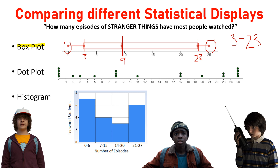Now, one thing you cannot tell looking at Dustin's box plot is how many people he surveyed. You have no idea looking at this box plot if he surveyed five people, a hundred people, or a million people. You can't tell. So that's one of the downfalls of a box plot.